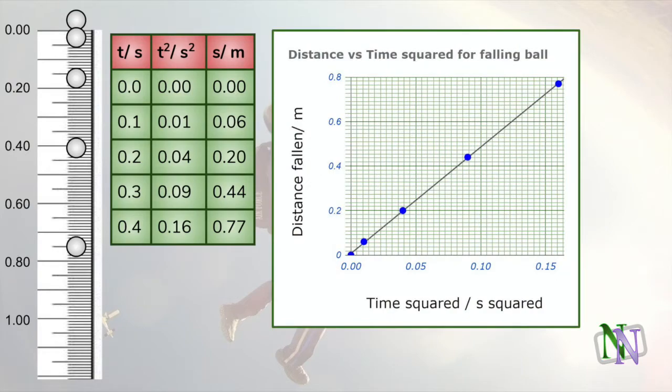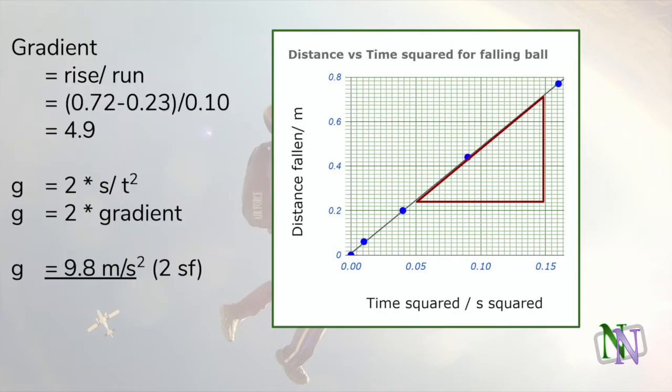The graph of s against t squared is a straight line through the origin. We can find the gradient of the graph and then use it to find little g as follows. We add the triangle and measure its rise and run, which works out as 4.9 units. Using the formula, we can substitute in the gradient and the result is 9.8 meters per second squared.